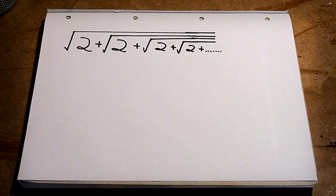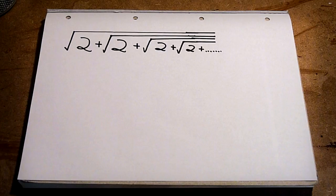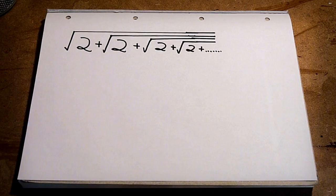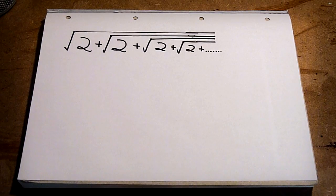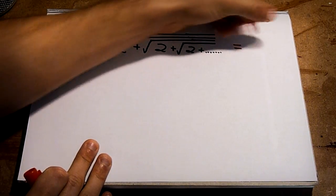The square root of 2 plus the square root of 2 plus the square root of 2 on forever is what's called a repeating square root. How do we calculate the value of something like this?